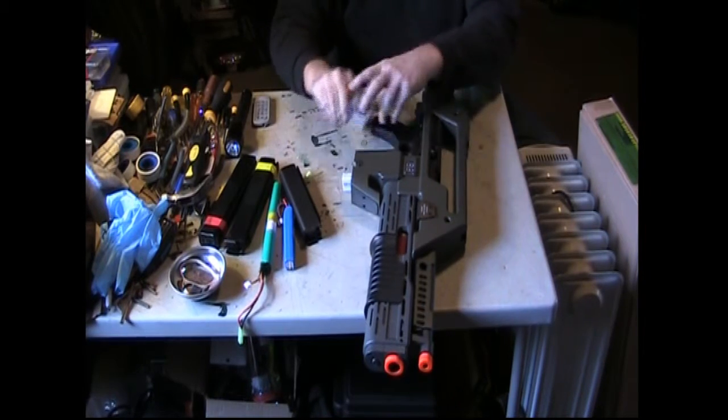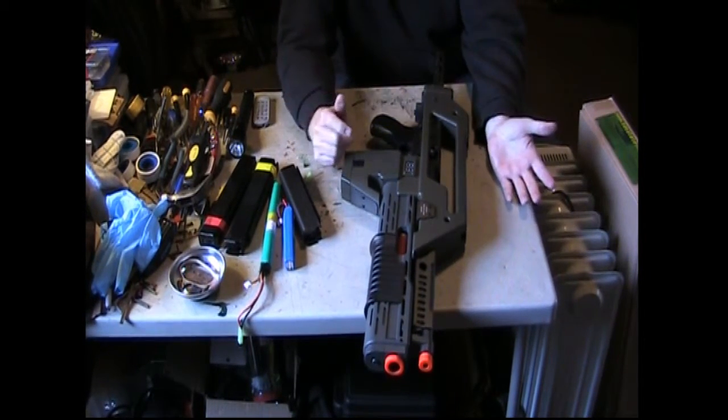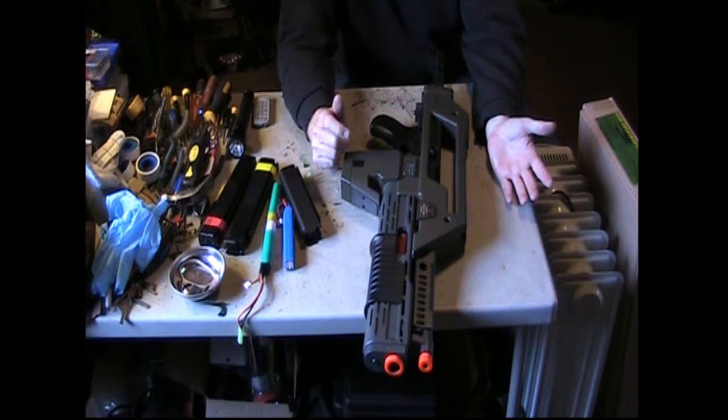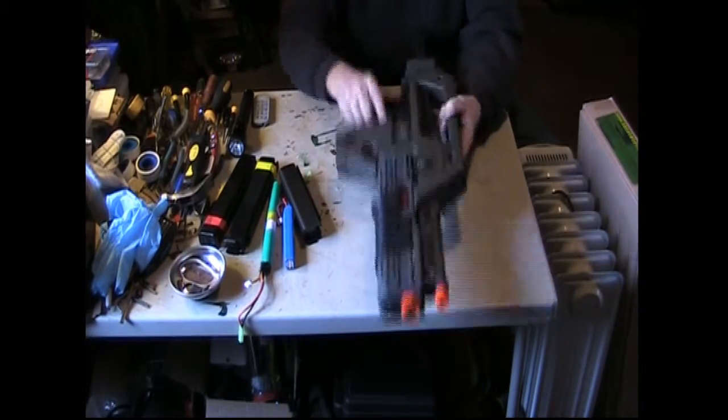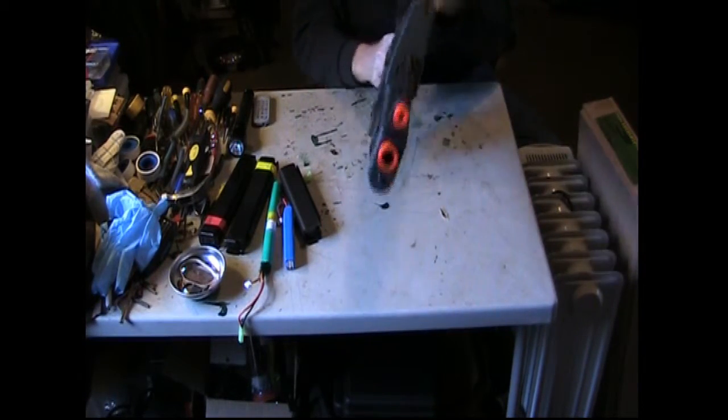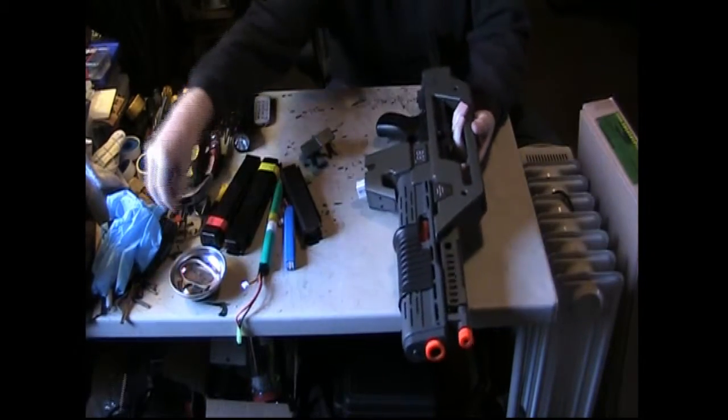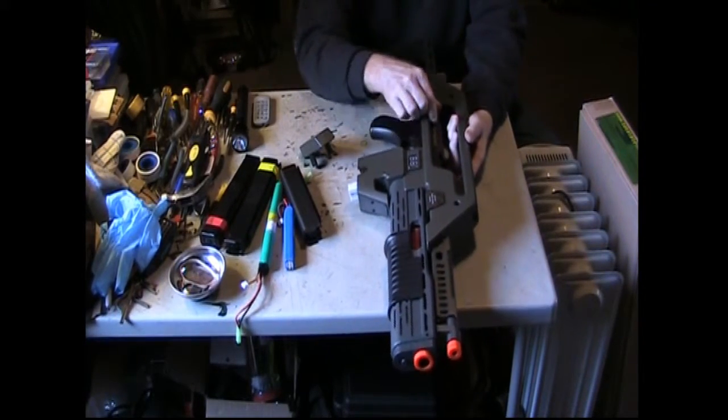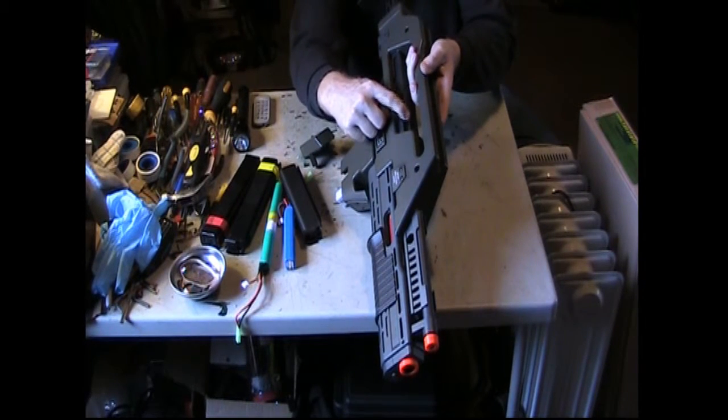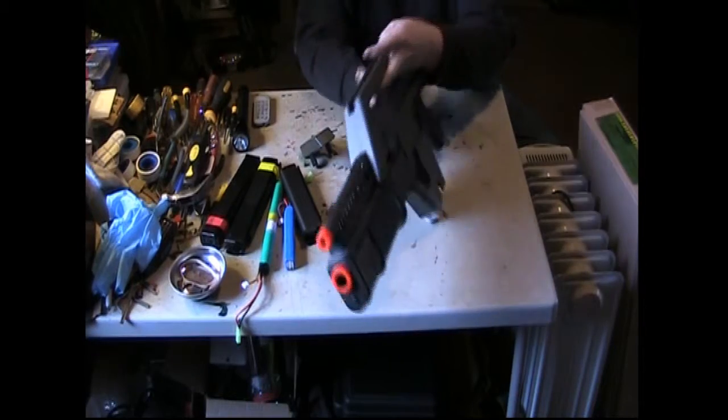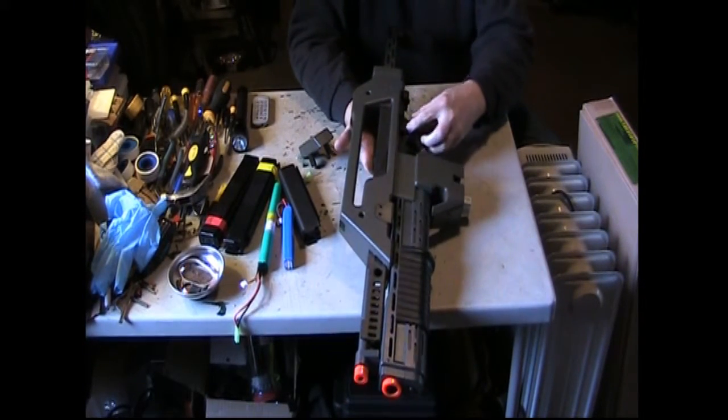All right let me get the mag out. So basic functions same as the Thompson if you've ever used the Thompson before. It has a charging handle which does nothing. The hop-up lever control is a rotary dial right here. Your controls are on this side, you have the semi full auto switch here and you have the safe and fire positions here.